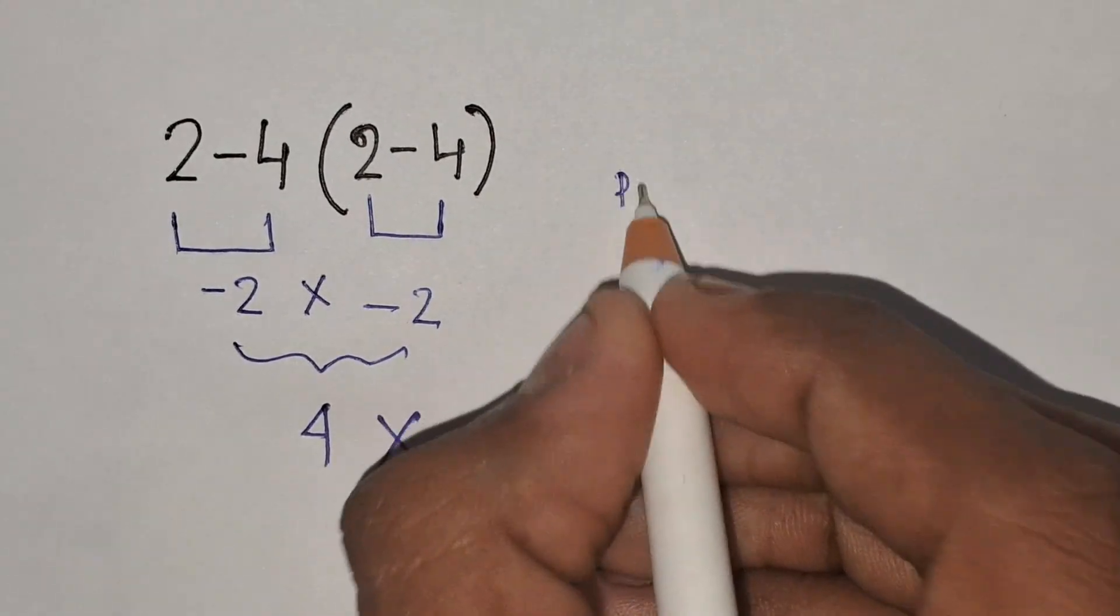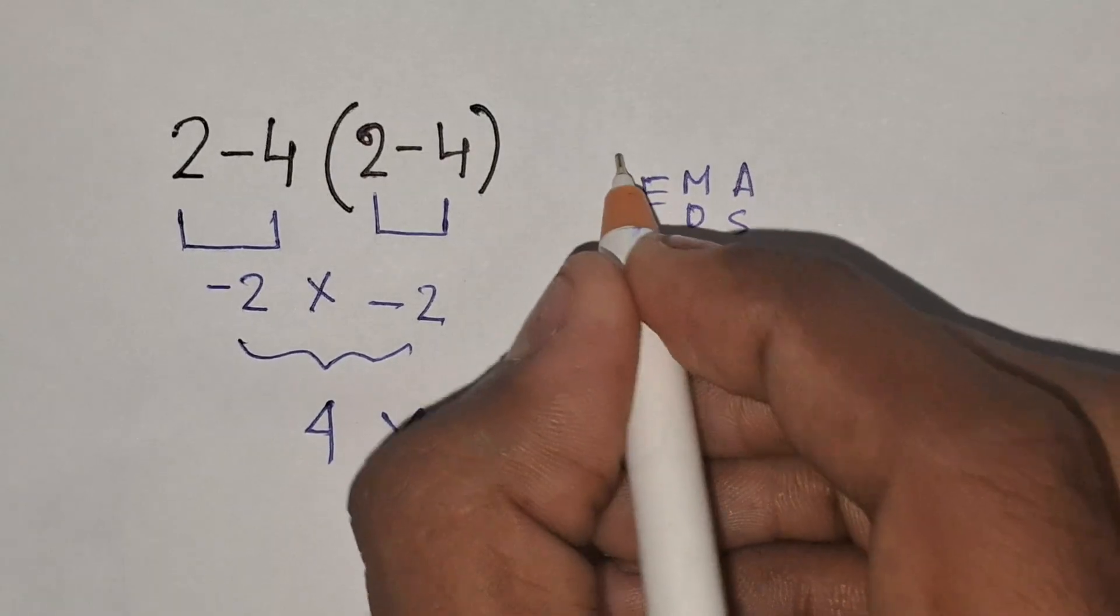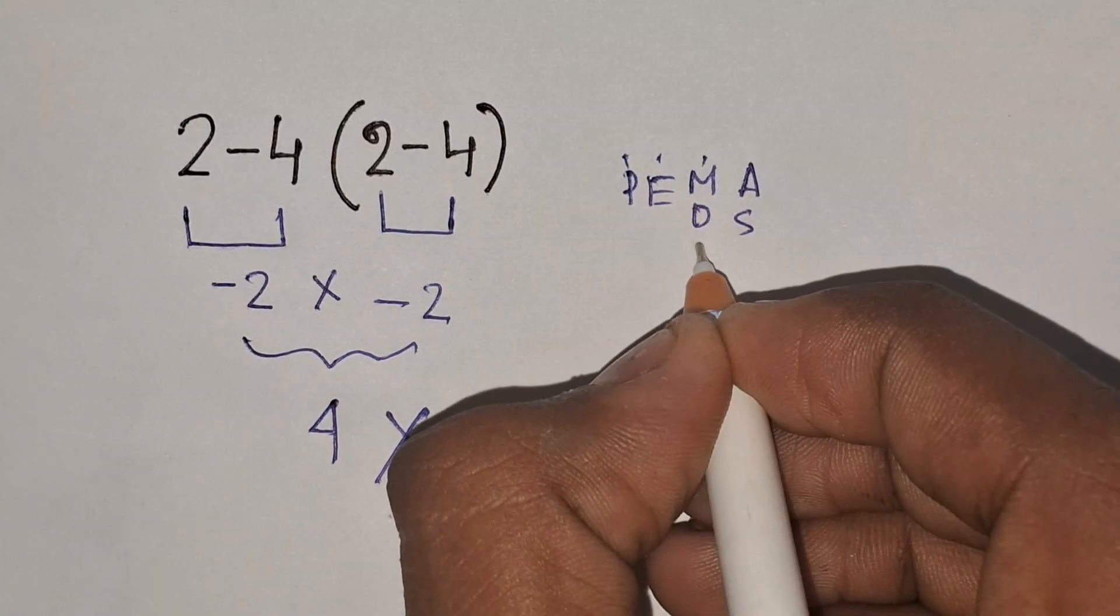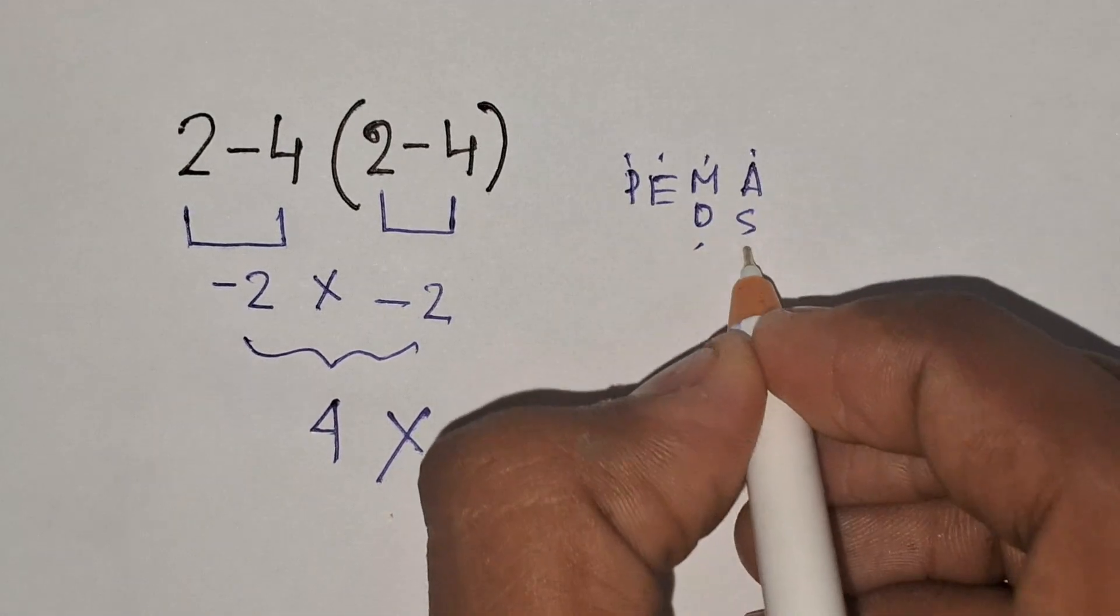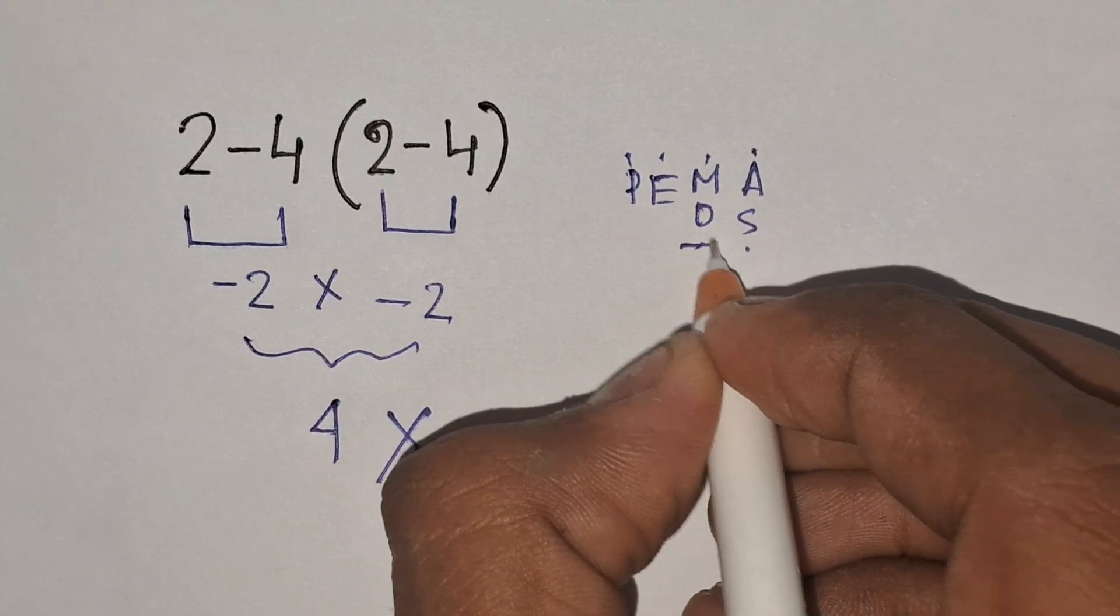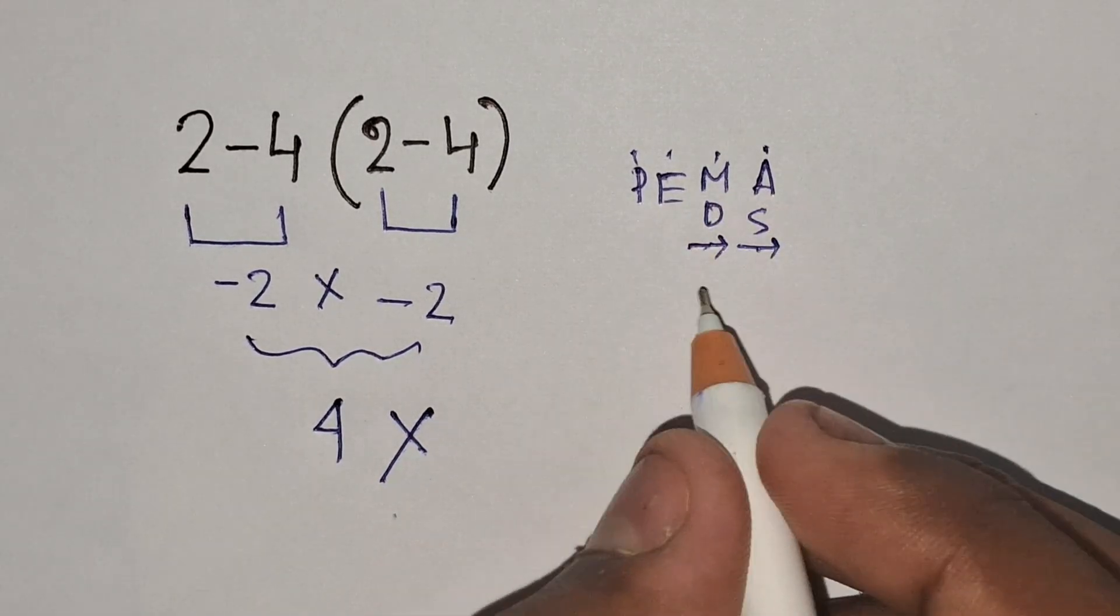The order of operations is called PEMDAS, where P stands for parentheses, E stands for exponents, M and D stand for multiplication and division, and A and S stand for addition and subtraction. We have to remember that multiplication and division, and addition and subtraction, have equal priority, but we solve them from left to right.